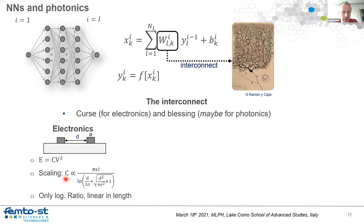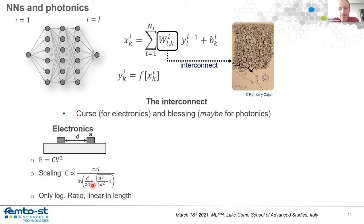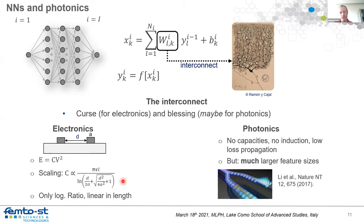A real problem is scaling: capacitance scales linearly with wire length and inversely with the logarithm of the ratio between wire spacing and cross-section. These almost always remain constant as you shrink features. If you compare a BNC cable's capacitance per unit length to a signaling wire in modern silicon electronics, they are the same order of magnitude — illustrating the gravity of the problem. In photonics you do not have that problem: signaling wires have no capacitance, and we now also have very low loss propagation, so sending a signal from A to B costs very little once created.